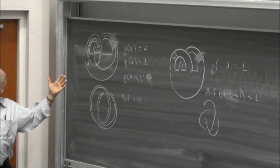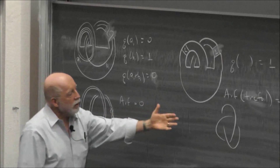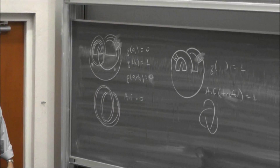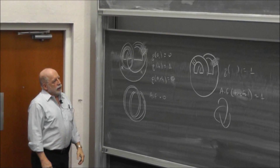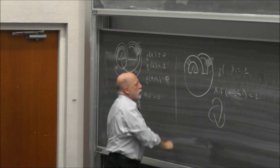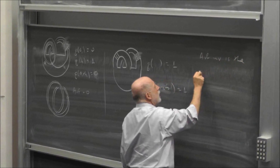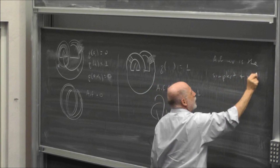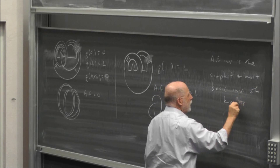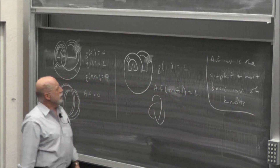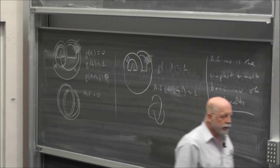For knot theory, the Arf invariant is the most basic invariant of a knot. It separates knots into two classes: those with Arf invariant 0 and those with Arf invariant 1. It doesn't depend on the surface you choose — that follows from a cobordism argument. So the Arf invariant is the simplest and most basic invariant of knots.